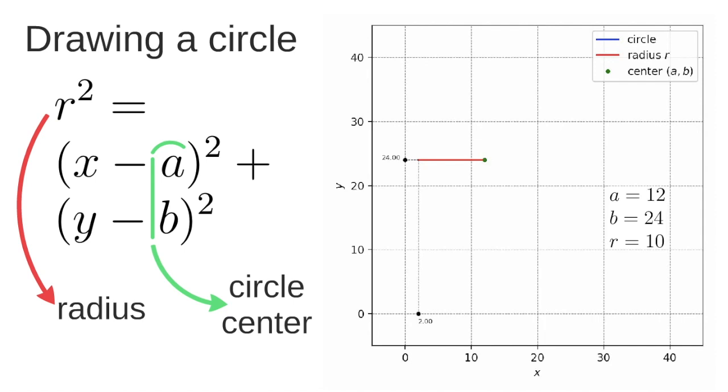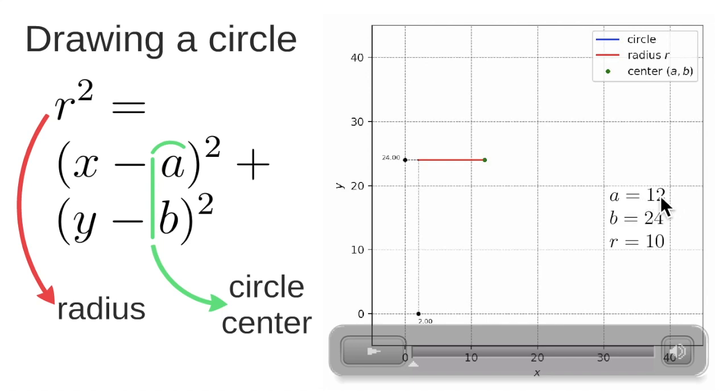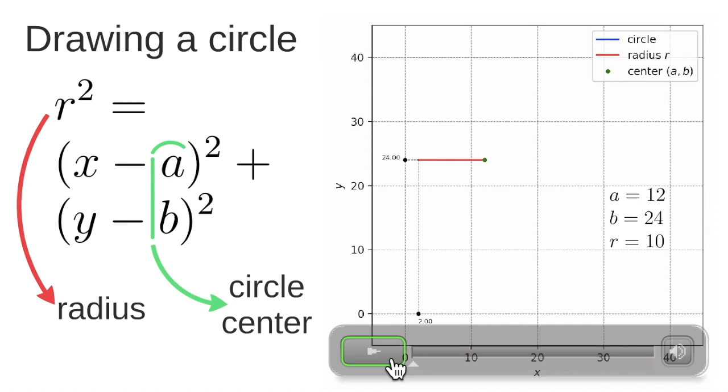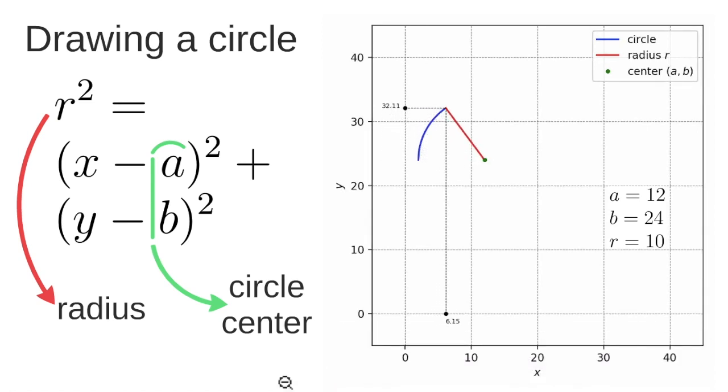So if we have these three variables, in this example I have a equal to 12, b equal to 24, so this point here, and the radius equal to 10. So we can compute the x and y values using this equation. So this is how we draw a circle given these three values.